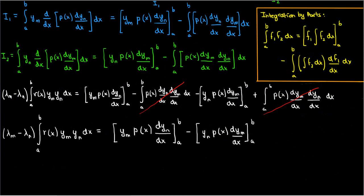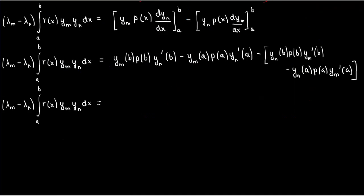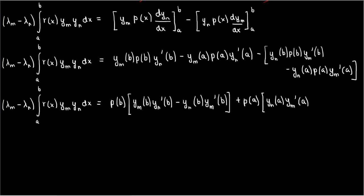Now let's apply the limits a and b on the right-hand side. The first term becomes y_m(b) times p(b) times y_n'(b), minus y_m(a) times p(a) times y_n'(a). Similar idea for the second term. Combining the terms on the right that multiply p(a) and p(b), here's what we finally end up with.